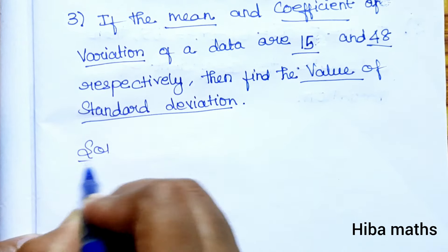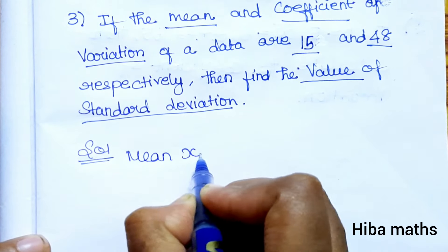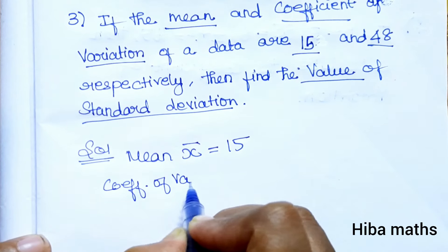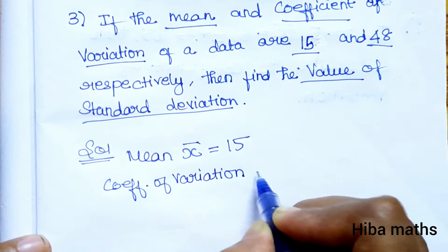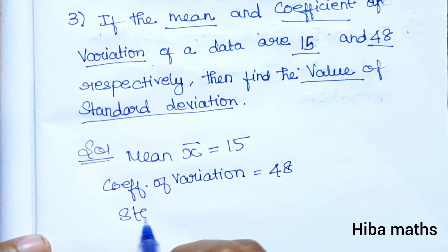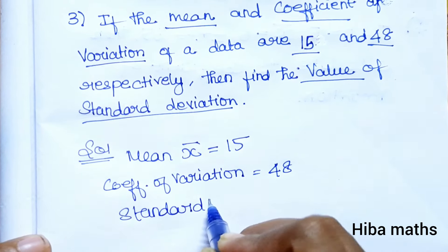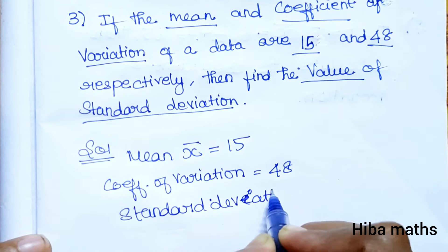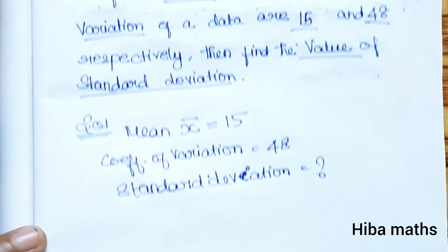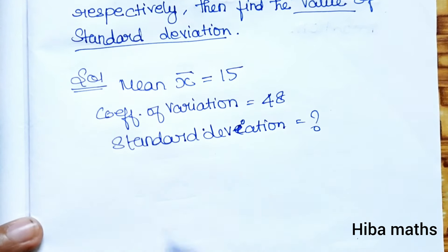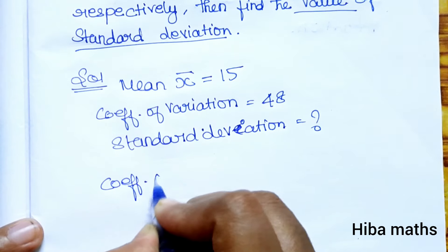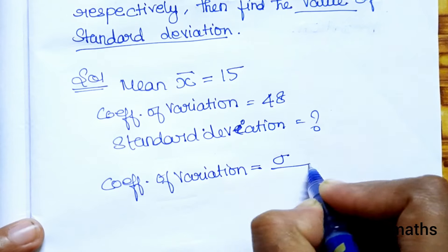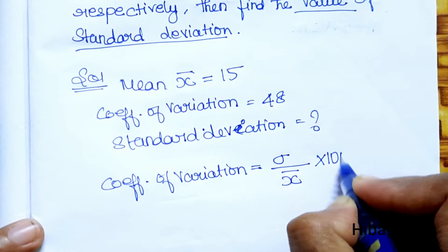Solution: Mean x̄ = 15, coefficient of variation = 48. Now standard deviation is to be found. The formula is coefficient of variation = (σ / x̄) × 100.